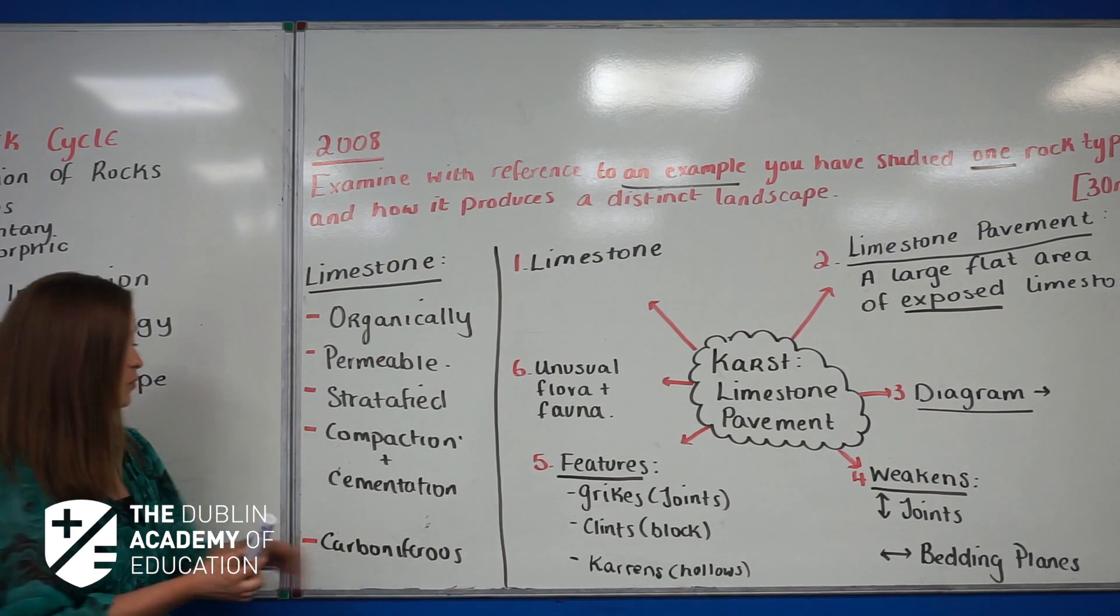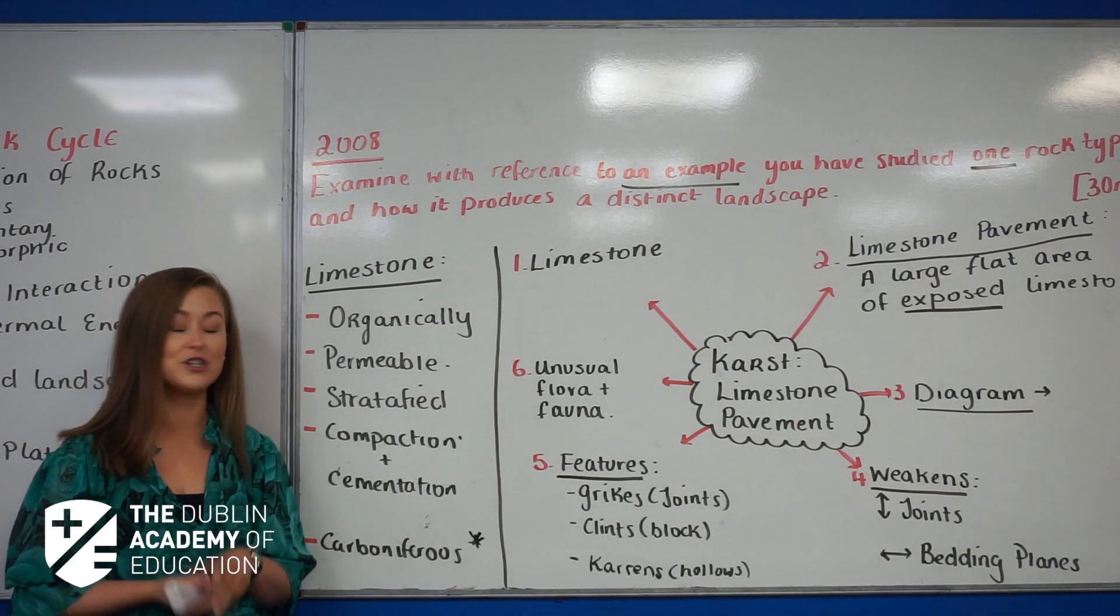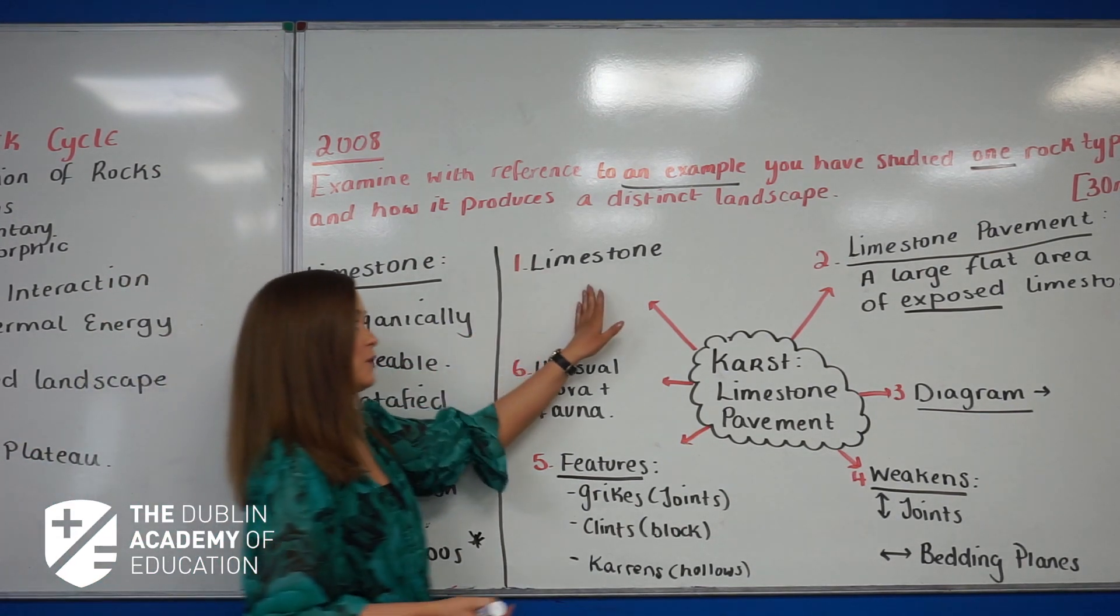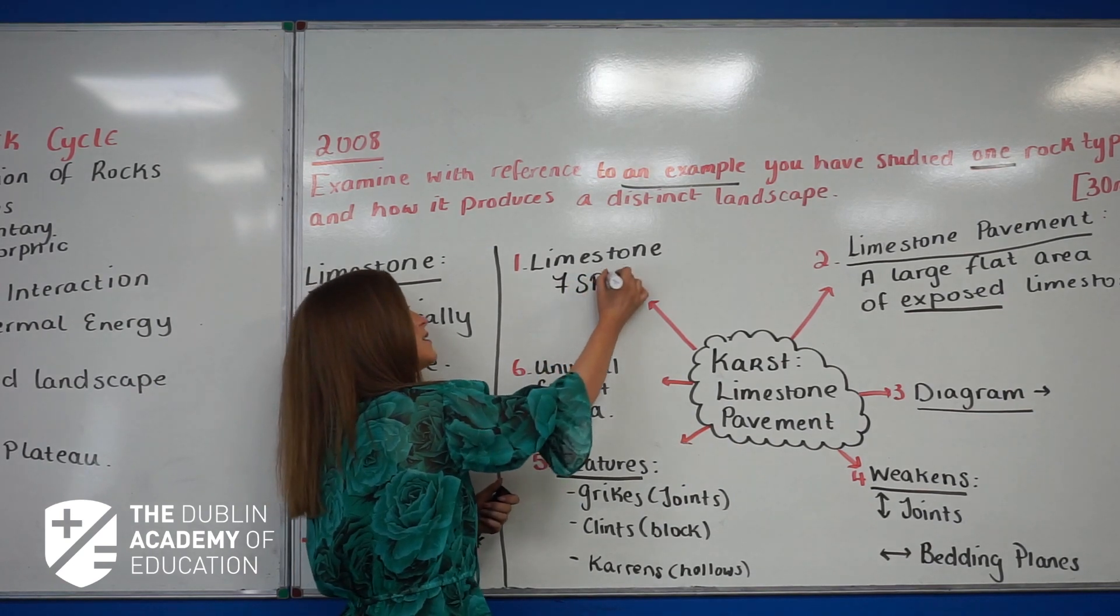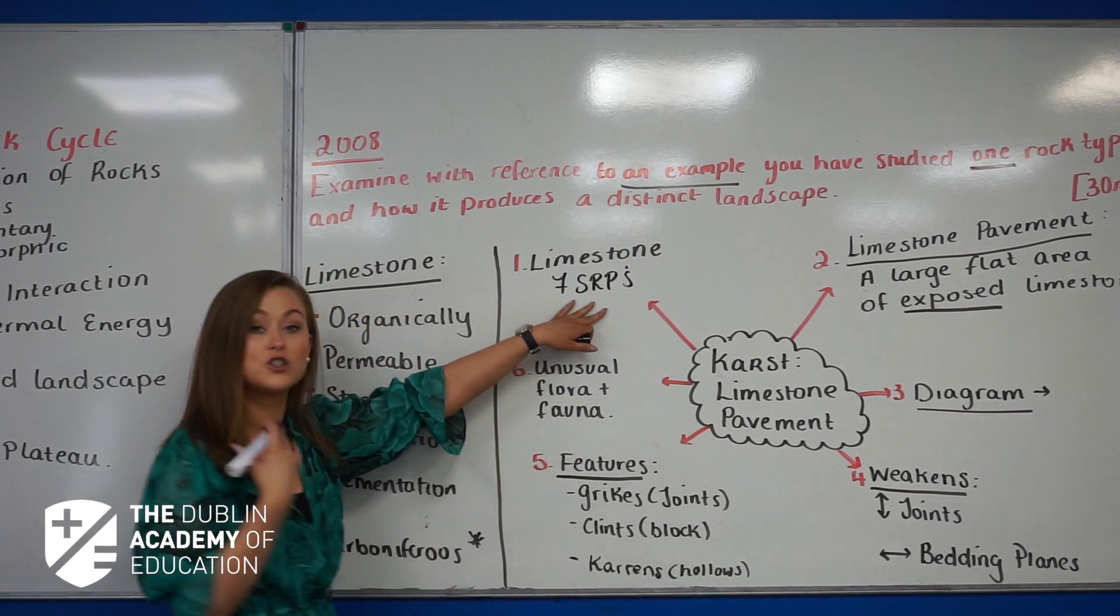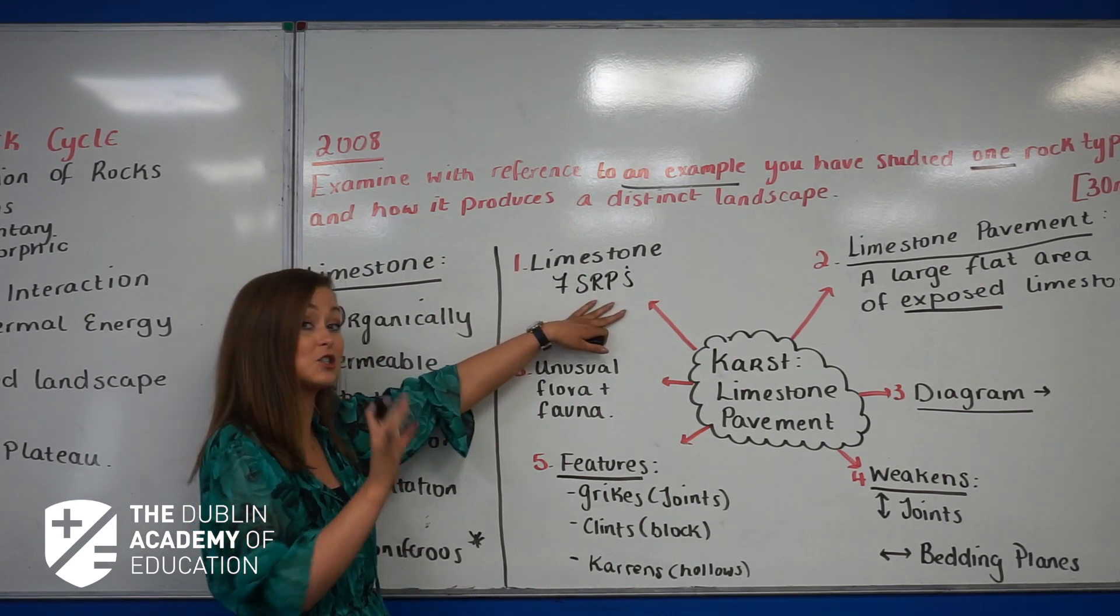Finally, the most important point here: Carboniferous limestone is the type associated with the karst region. So that would be our first point that we'd discuss, and we'd probably discuss approximately seven SRPs just solely on limestone in this question. Now that can vary depending on how the question is actually phrased.